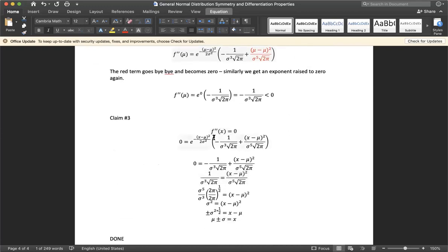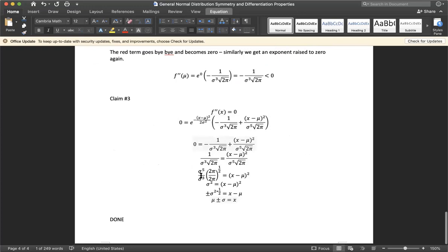Now finally to find the inflection points and show that it's the mean plus or minus the standard deviation. We found the second derivative, ugly thing that it is already. The exponential term can never be zero, so we have to simplify this. All these steps over here.